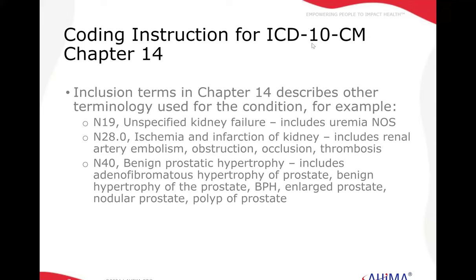Another thing that is helpful to remember is that there are certain inclusion notes in Chapter 14. This talks about other terminologies used for the same condition that would map to the same code. For instance, N19, unspecified kidney failure, includes such terms as uremia, not otherwise specified.